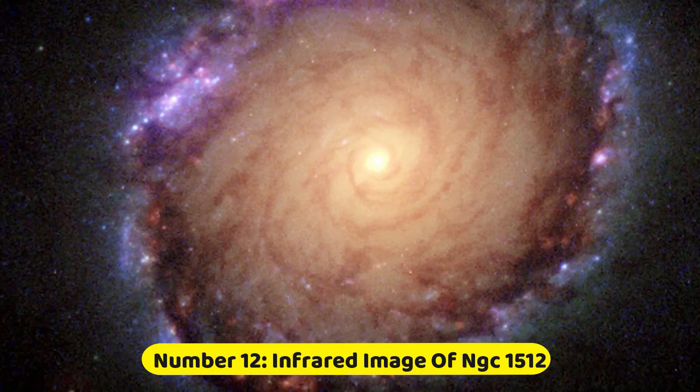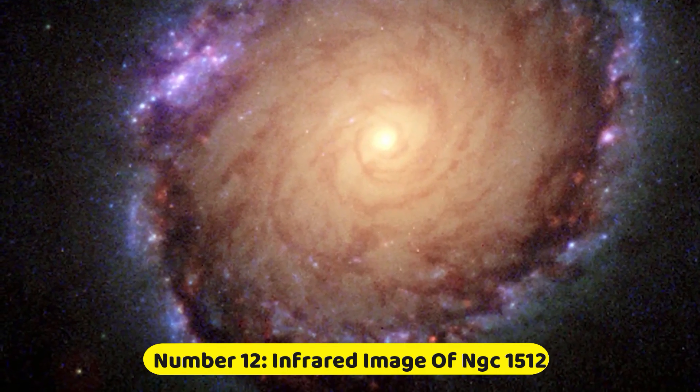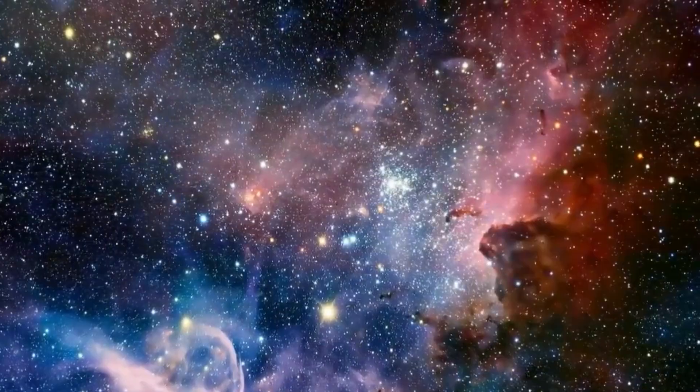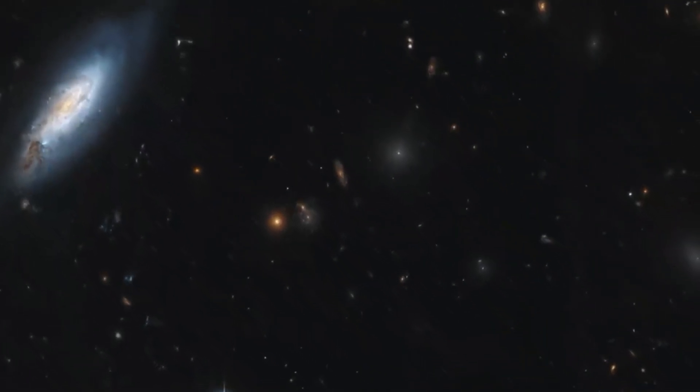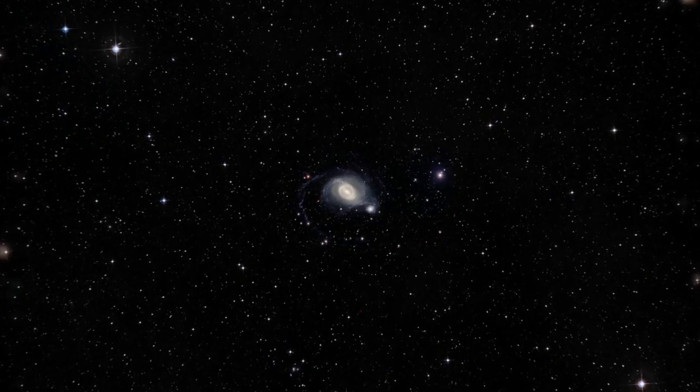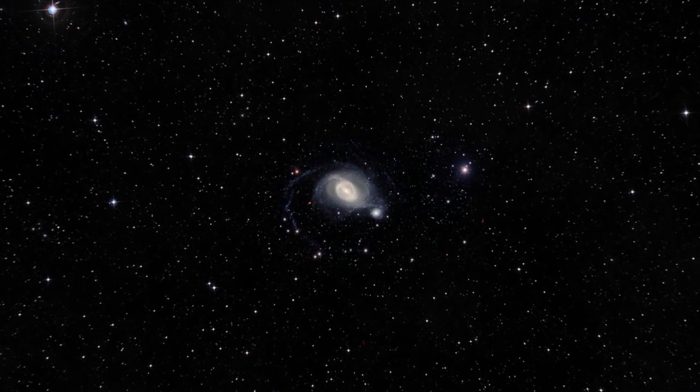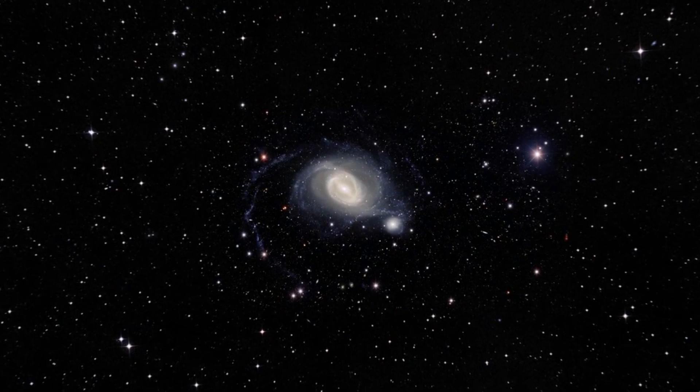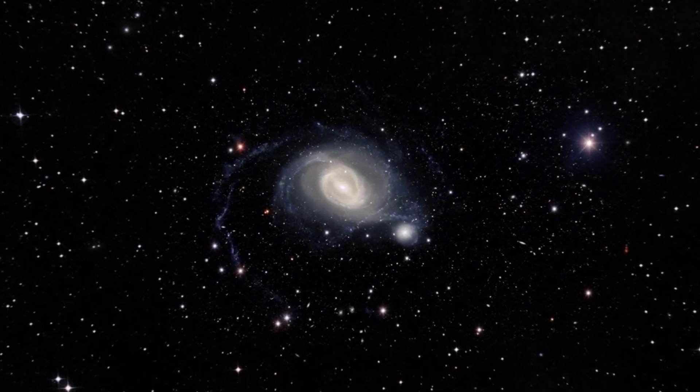Number 12. Infrared Image of NGC 1512. NGC 1512 is a barred spiral galaxy located in the constellation Horologium approximately 38 million light-years from Earth. This galaxy exhibits two concentric rings with a nuclear ring surrounding the galactic center and an inner ring extending outward from the main disk.